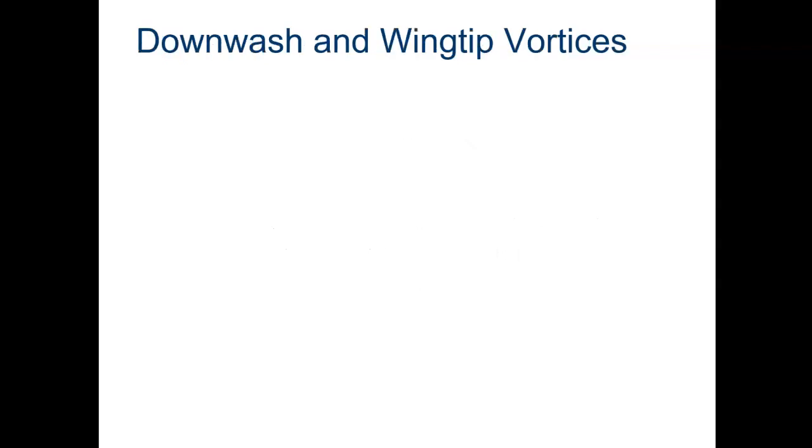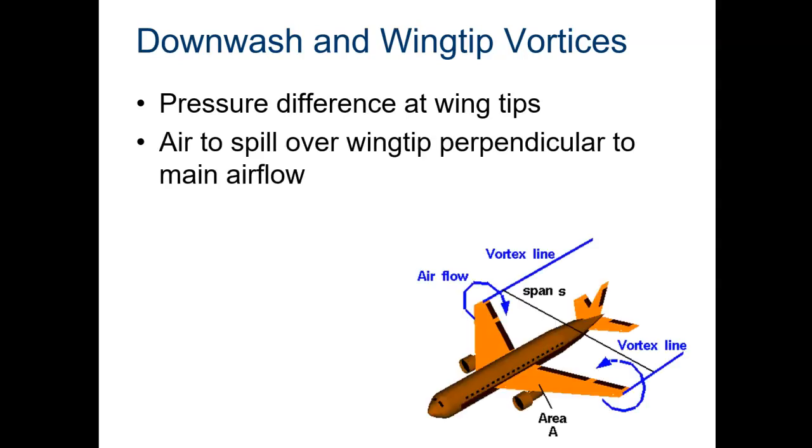Let's take a look at some things that cause drag and maybe some ways to combat them. A couple of things we want to look at are called downwash and wingtip vortices. Wingtip vortex, when you have more than one vortex, it's called vortices.